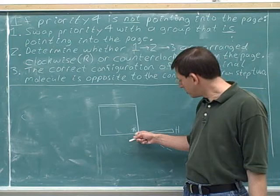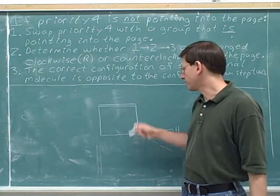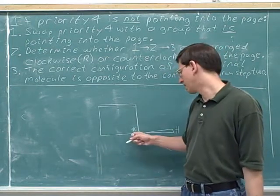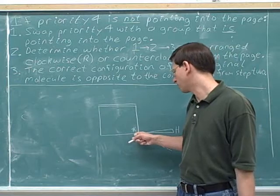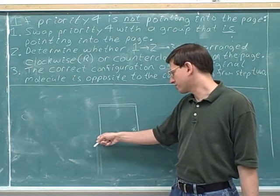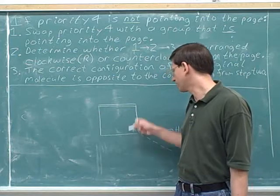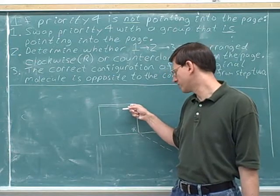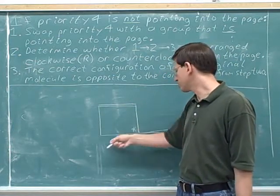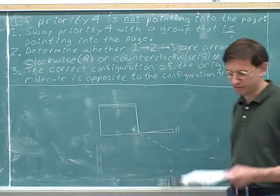If we go counterclockwise around the ring, we're going to encounter a different path than if we went clockwise. If we go clockwise, the first thing we encounter is a CH2 group. But if we go counterclockwise, the first thing we encounter is a double bonded carbon. So these two paths count as two different groups, and this is a stereocenter.